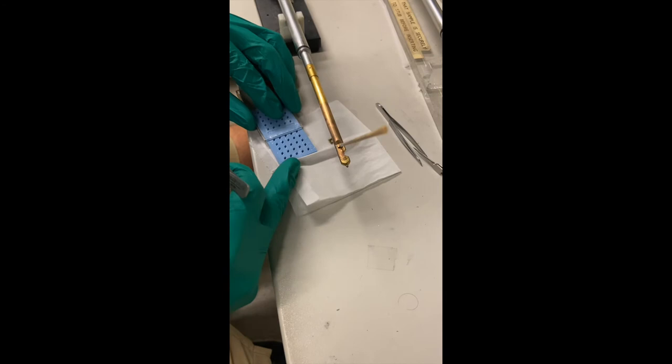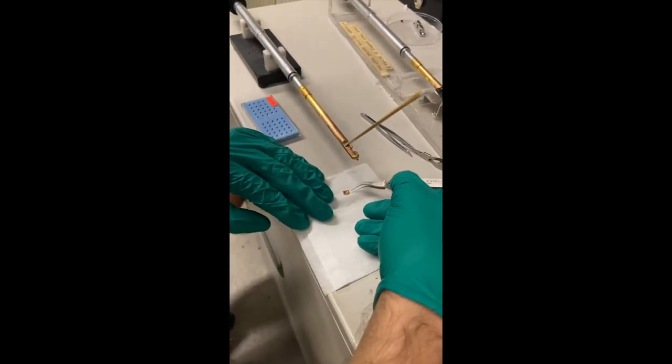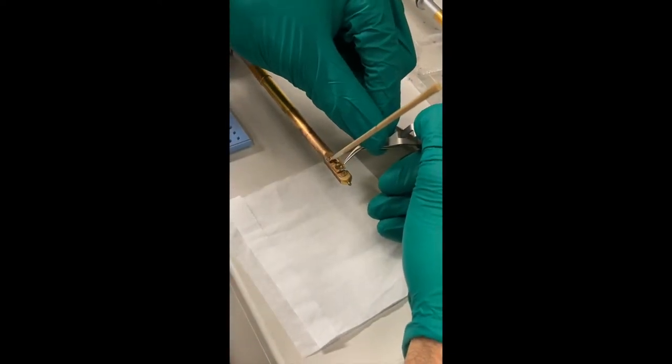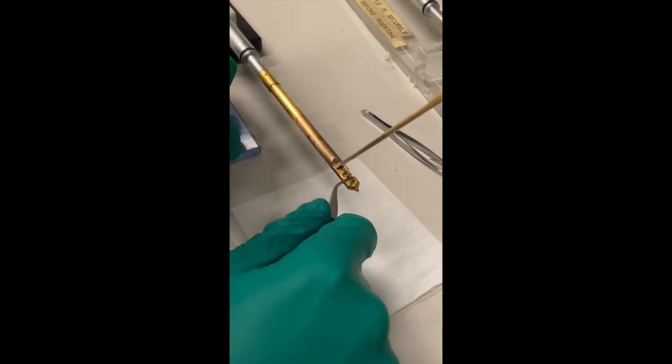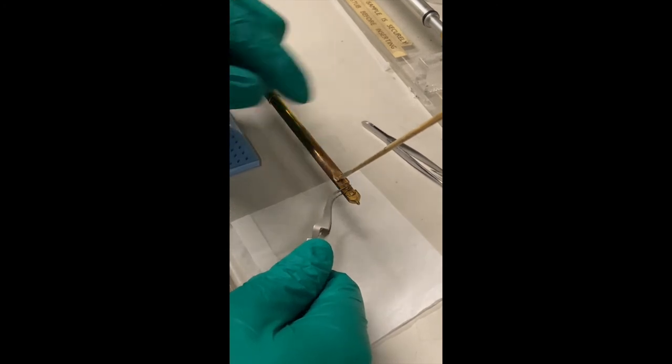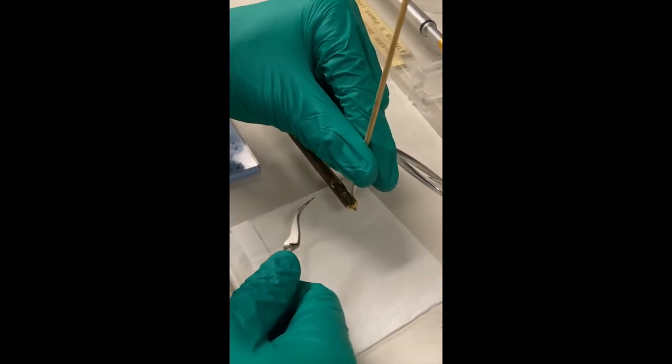Now that we know about how the instrument works, let's run a sample. The first thing that we need to do is load our sample into the instrument. In order to do this, we have to put our grid in a special sample holder that can slide into the vacuum chamber. Let's watch as I definitely don't screw this up and do multiple takes.